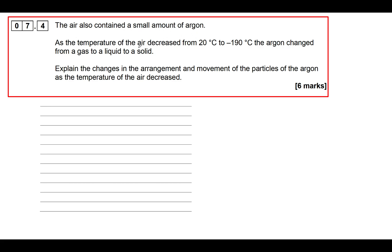The question is talking about argon — they're cooling down some air containing argon from 20°C to minus 190°C, and the argon changed from a gas to a liquid to a solid. So we've got two changes of state: gas to liquid, and liquid to solid. The command word is 'explain', which means give a scientific reason, so I'd expect to see the word 'because' appearing at several points in your answer.